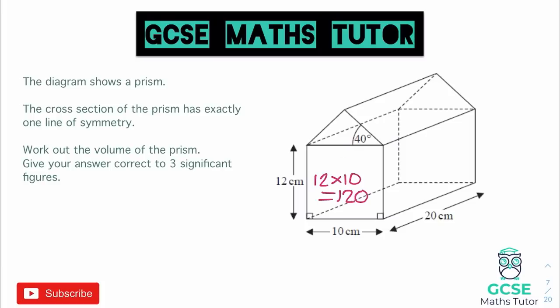Let's split the triangle down the middle. Now that we've split it down the middle, we have a right-angle triangle on the left and on the right. So I can use SOHCAHTOA to work out the height. Half of that base would be 5 on each side, so the base of that right-angle triangle is 5. Drawing this to the side: we have an angle of 40 degrees, a right angle, 5 on the bottom, and we want to work out the opposite side.